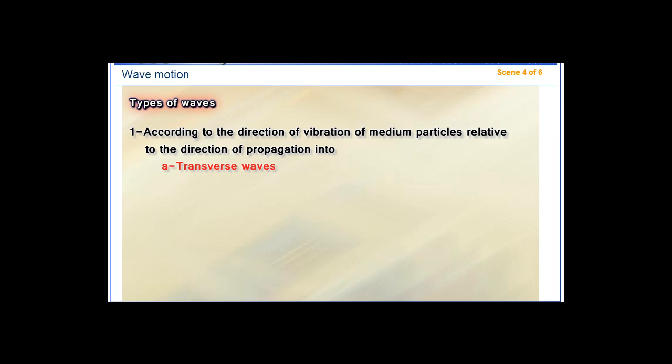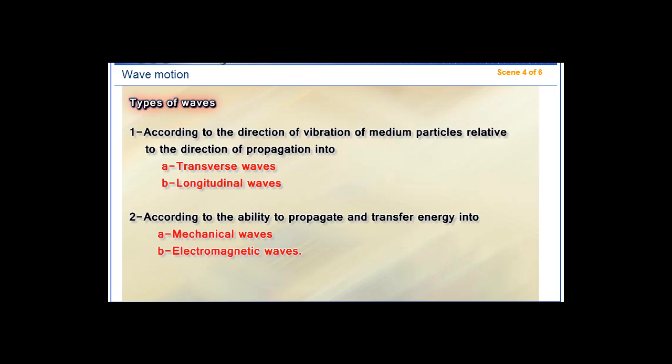Types of waves. Waves can be classified in two ways. One, according to the direction of vibration of medium particles relative to the direction of propagation into A, transverse waves, and B, longitudinal waves. Two, according to the ability to propagate and transfer energy into A, mechanical waves, and B, electromagnetic waves.